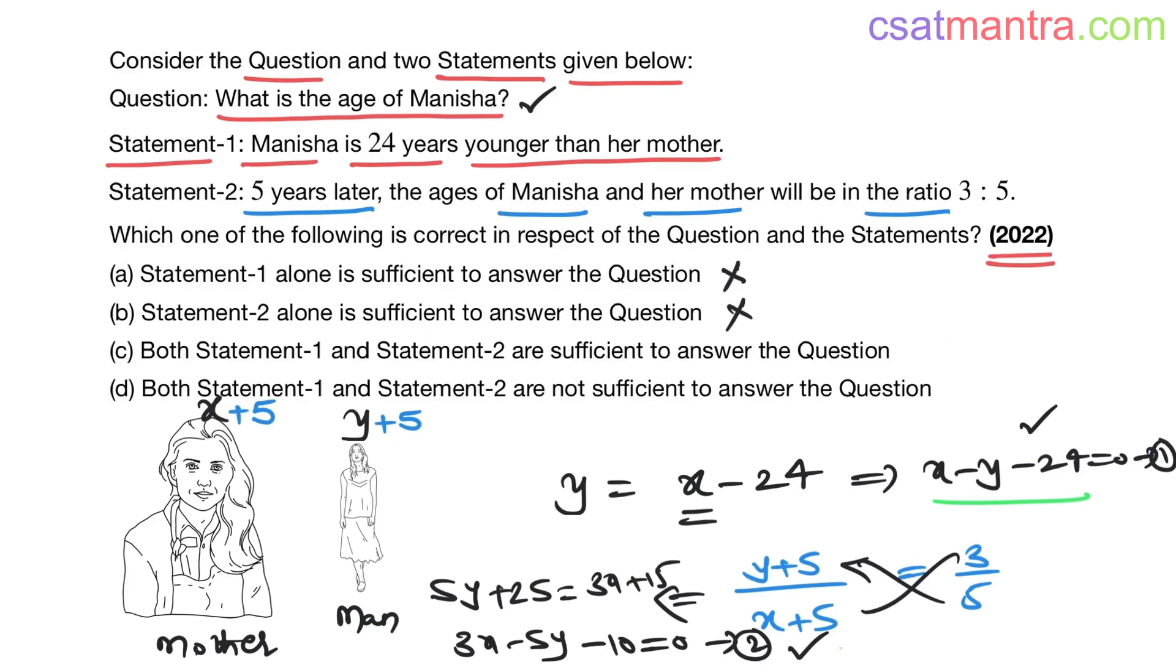See the ratios of the coefficients of x and y: 1 by 3, minus 1 by minus 5, that is 1 by 5. The minus signs cancel. So 1 by 3 is not equal to 1 by 5. That means these two equations have a solution. This is what we learned in algebra.